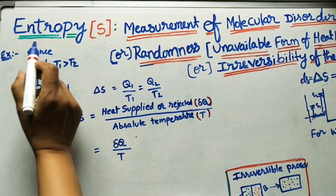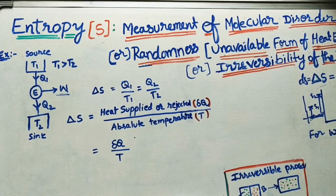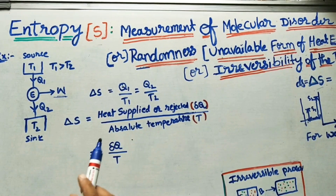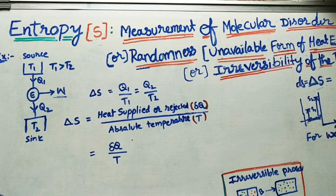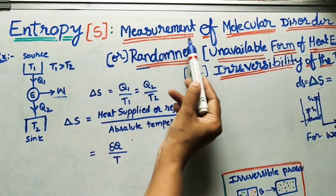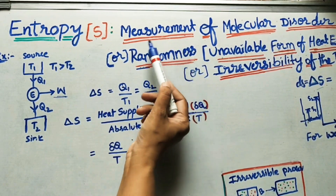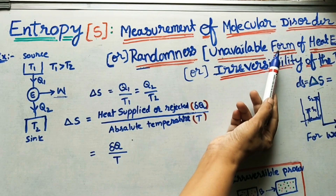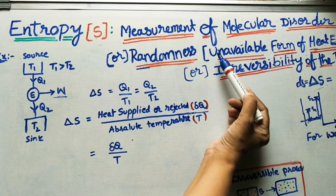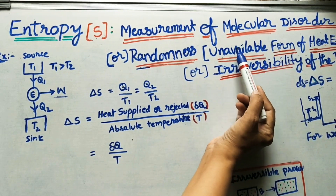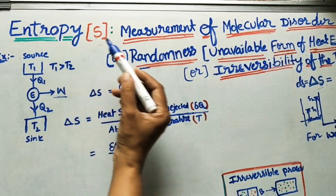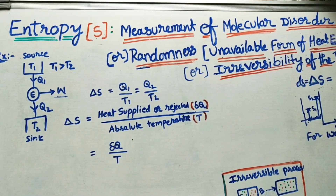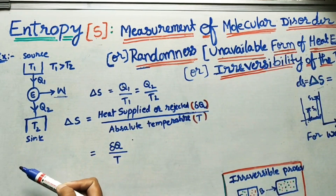In today's class we will discuss what is entropy — the formulas we use for finding entropy and its units. Entropy is denoted by the symbol capital S. It has three definitions: measurement of molecular disorder or randomness, unavailable form of heat energy, and irreversibility of a process. If a process is irreversible, we can find entropy in that process.